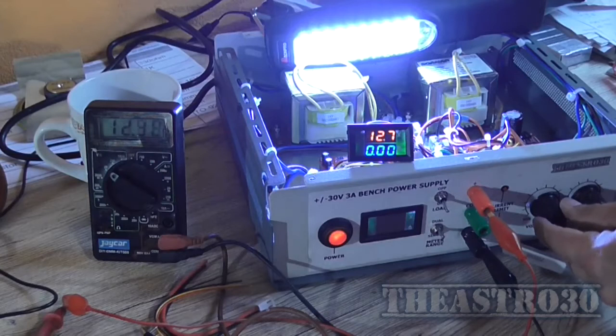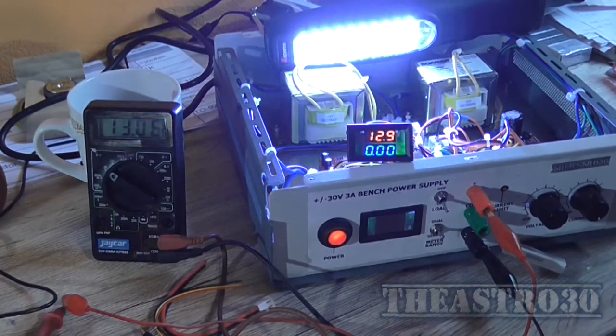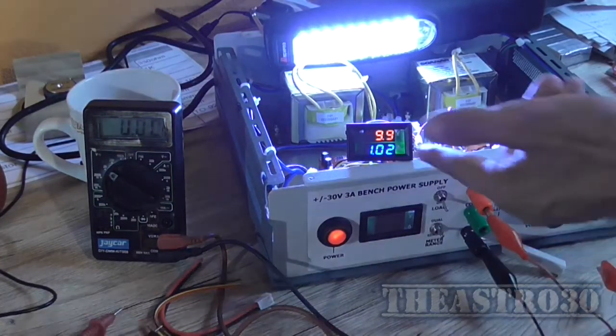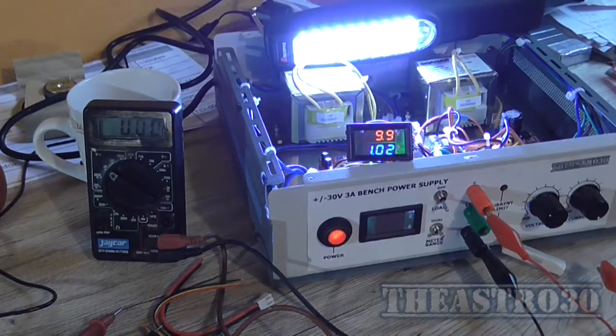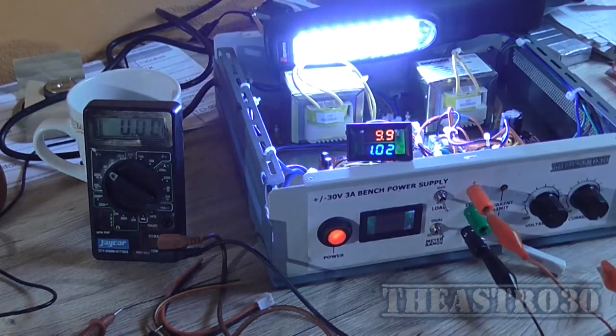We're at 10.6V and it's 10.8V. That is kind of out. 13.6V, 12.9V. Yeah, we're about 700mV out. 1A at 10V. That's a much more accurate reading than what I was getting before.